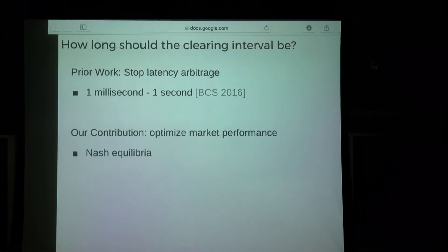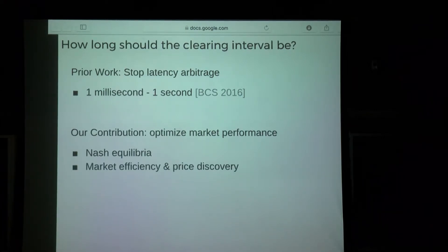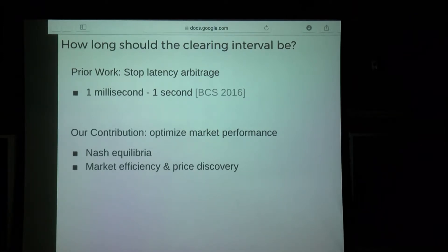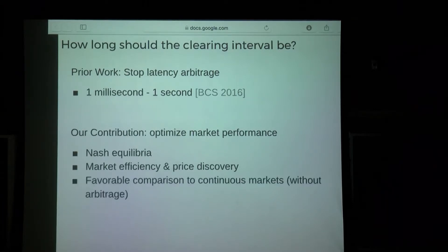To do this, we're going to use a modified standard mechanism design approach by analyzing how agents respond in Nash equilibrium. The two market performance metrics we'll look at are efficiency — how well does the market allocate securities between agents — and price discovery, meaning how closely does the transacted price match the underlying fundamental price we model in the exchange.